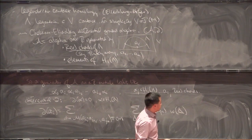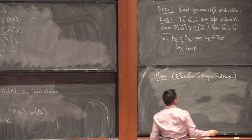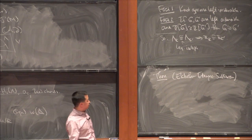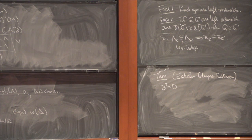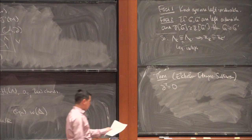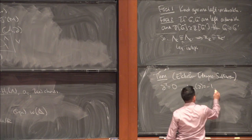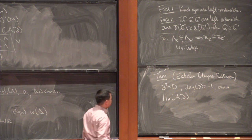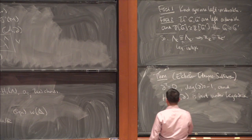The theorem, proven in this setting by Ekholm, Etnyre, and Sullivan — with earlier proofs in more restricted contexts by Chekanov — is that d is actually a differential: extended by the Leibniz rule to the entire algebra, its square is zero. It lowers degree by one. Since d² = 0, you can take the homology, and this is invariant under Legendrian isotopy of Lambda. This is what I'll call the Legendrian contact homology of Lambda.